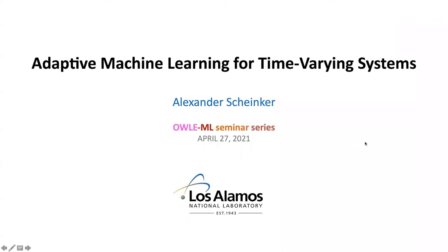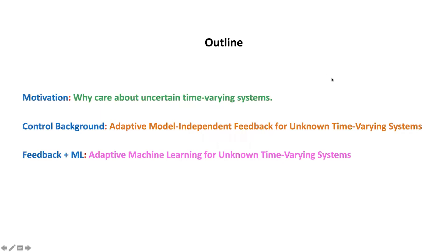Andreas, thank you very much for inviting me to this. I'm going to talk about some approaches to adaptive machine learning for time-varying systems. A quick outline of the talk is a little motivation about why we care about uncertain and time-varying systems, then some quick background on adaptive model-independent feedbacks for time-varying systems, and then how we combine that with machine learning to actually do adaptive machine learning.